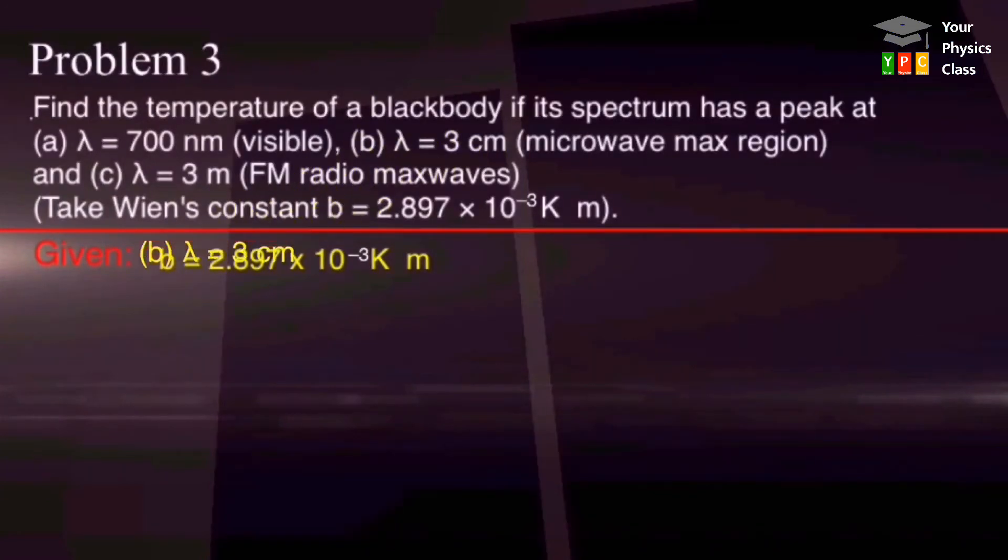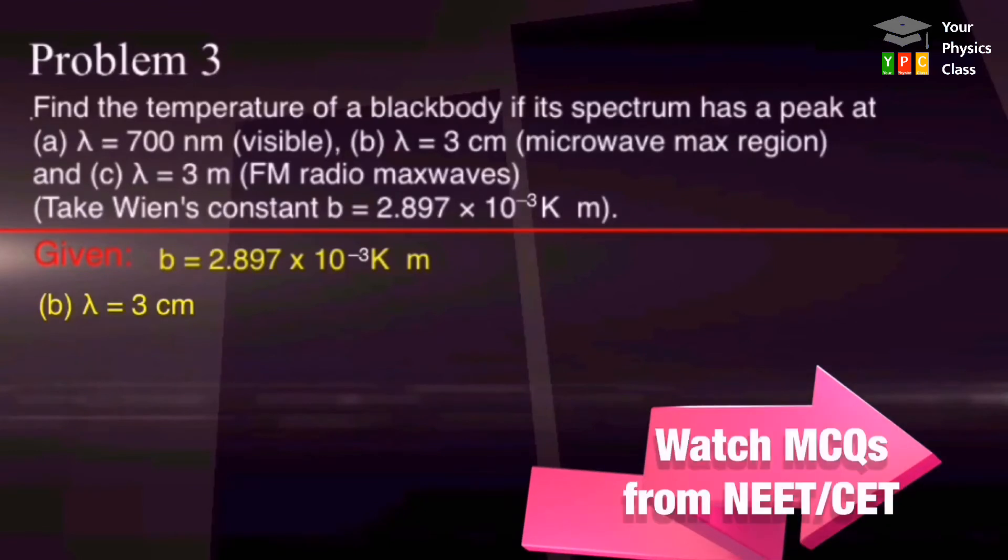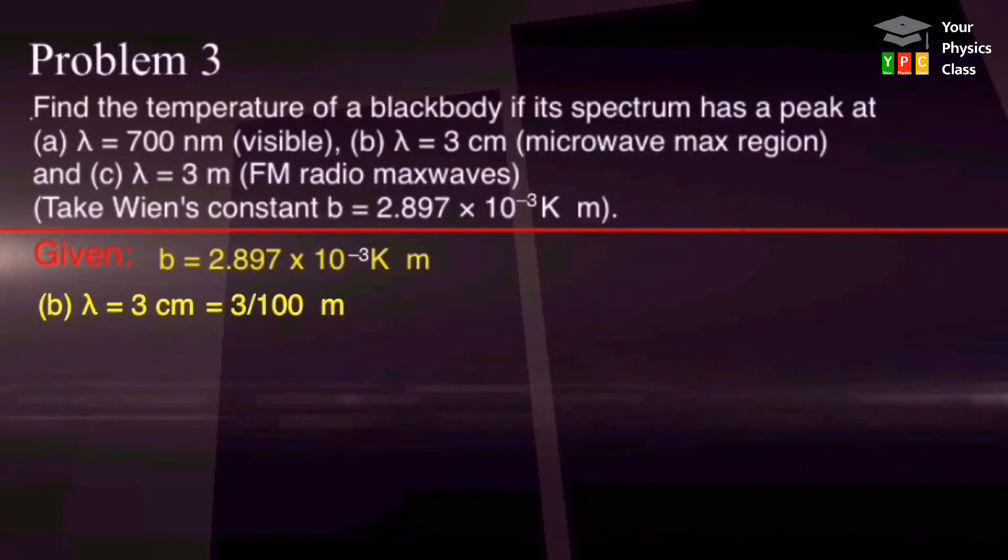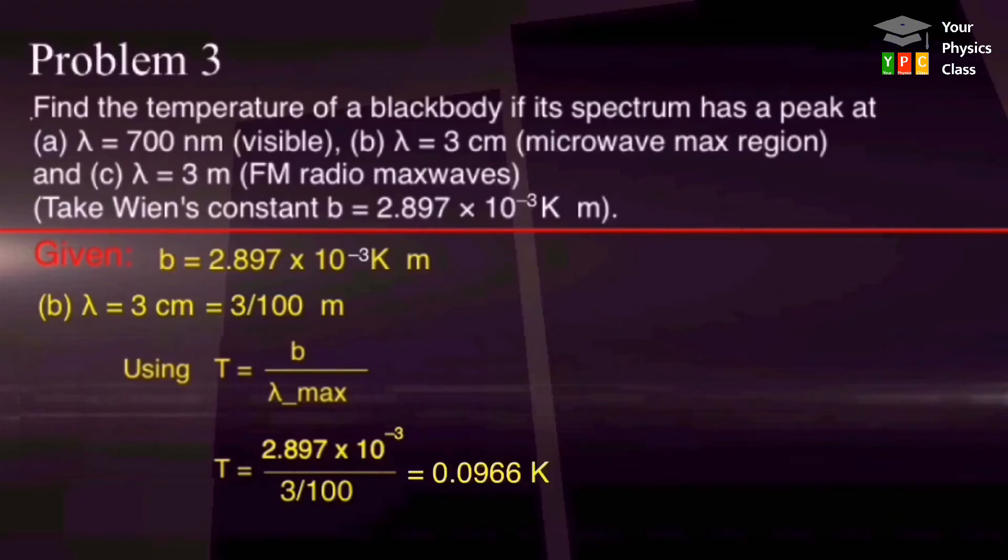Similarly, for the second part. Now, lambda is given as 3 centimeter. You have to convert 3 centimeter into meter. This can be done by dividing 3 by 100. Now, using Wien's displacement law in the same format, substituting values and solving this equation, we get this as your answer.